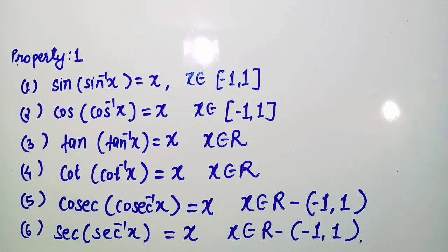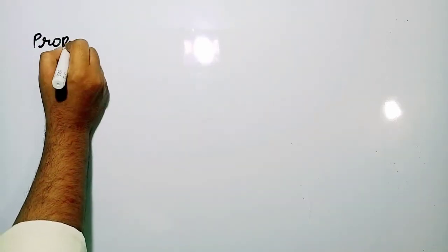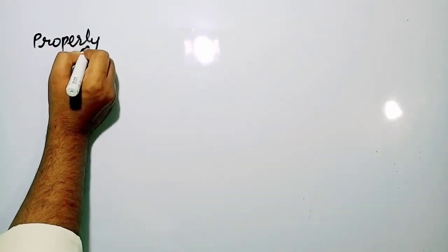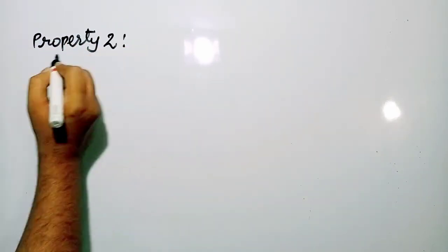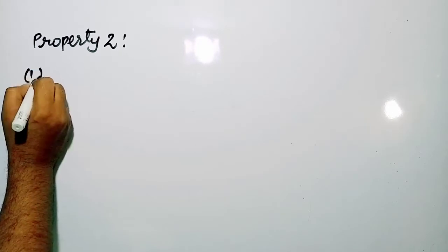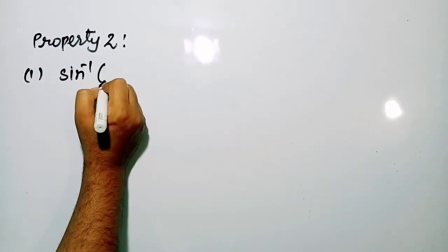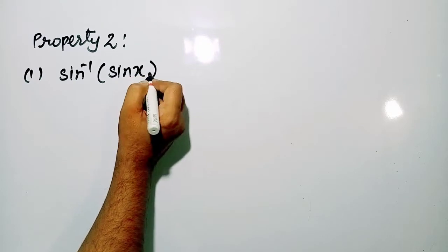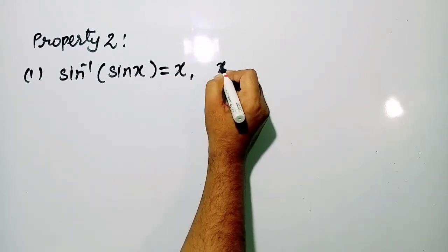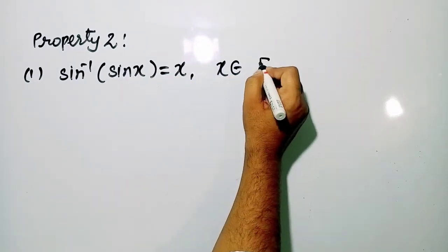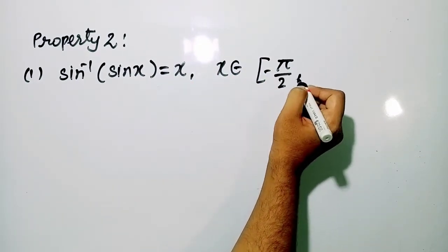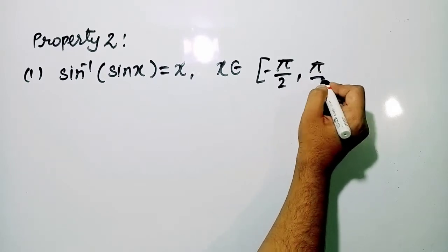Okay students, these are the first properties of inverse trigonometric functions. Now moving to the second properties. The first one is: sin⁻¹(sin x) = x, where x belongs to [−π/2, π/2].